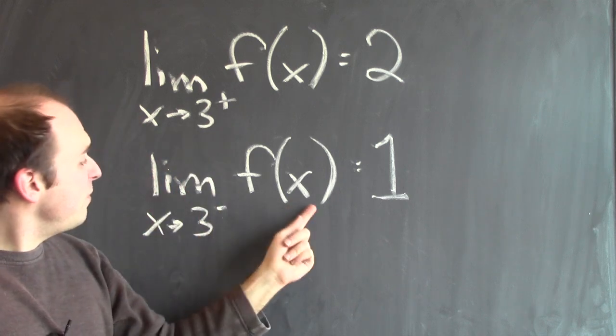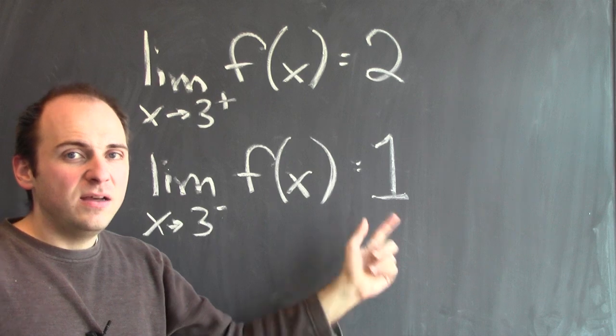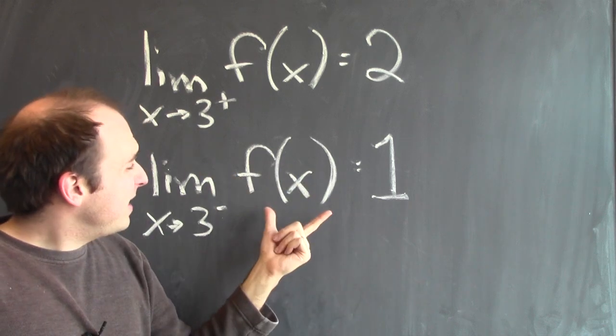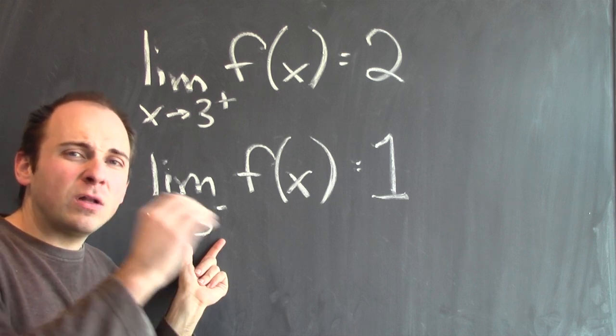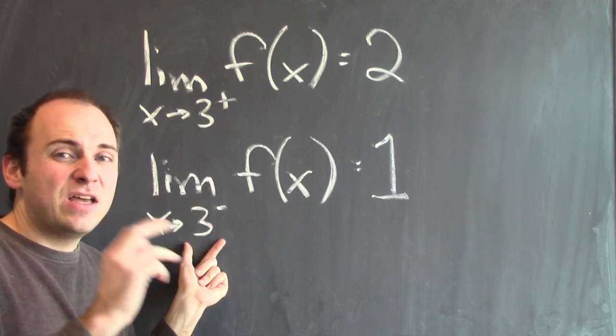Similarly, the limit of f of x as x approaches 3 from the left-hand side is equal to 1. If you think back to the graph, I was getting outputs that are close to 1 if I evaluated the function at inputs which were close to, but just a little bit less than 3.